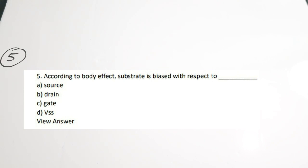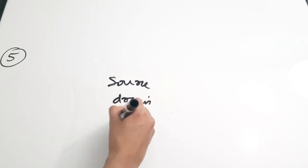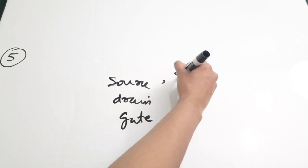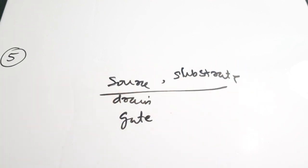Fifth question: According to the body effect, the substrate is biased with respect to dash. There is a phenomenon in CMOS structures called body effect. Here we are actually biasing the substrate with respect to the source terminal. The three terminals are: source, drain, and gate. You are going to bias the substrate with respect to the source. In order to minimize the body effect, we bias the substrate according to the source. Correct answer is A.